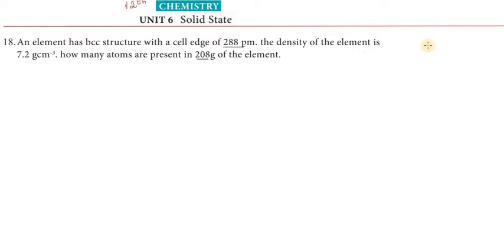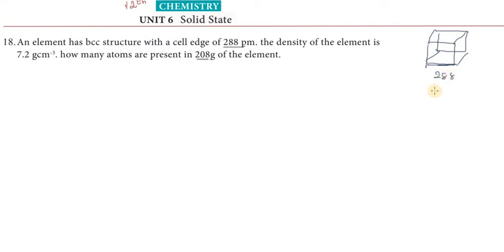The given edge length a = 288 picometers. I am going to convert this to centimeters: 288 pm = 2.88 × 10⁻⁸ centimeters. So edge length a = 2.88 × 10⁻⁸ cm.